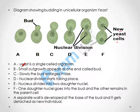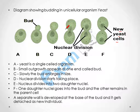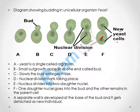The steps for yeast budding are: yeast is a single-celled organism; a small outgrowth appears at one end called a bud; slowly the bud enlarges in size; then nuclear division takes place and the nucleus divides into two; two daughter nuclei are developed — one goes into the bud and the other remains in the parent cell.